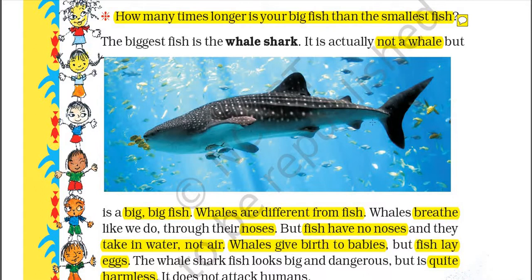Whales are different from fish — they look similar but their structure is different. Whales breathe through their noses just like we do, but fish have no nose — they have gills and take in water, not air. Whales breathe air through their nostrils, which are in the upper region of their head. Whales give birth to babies, but fish lay eggs.